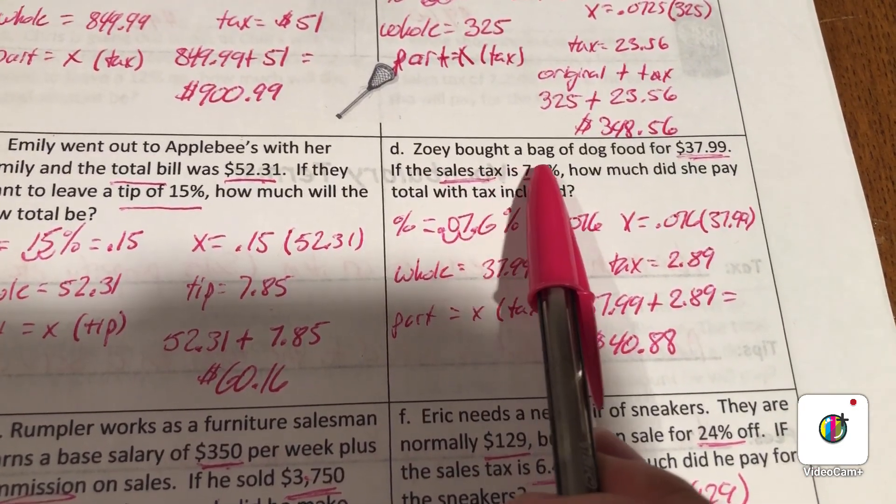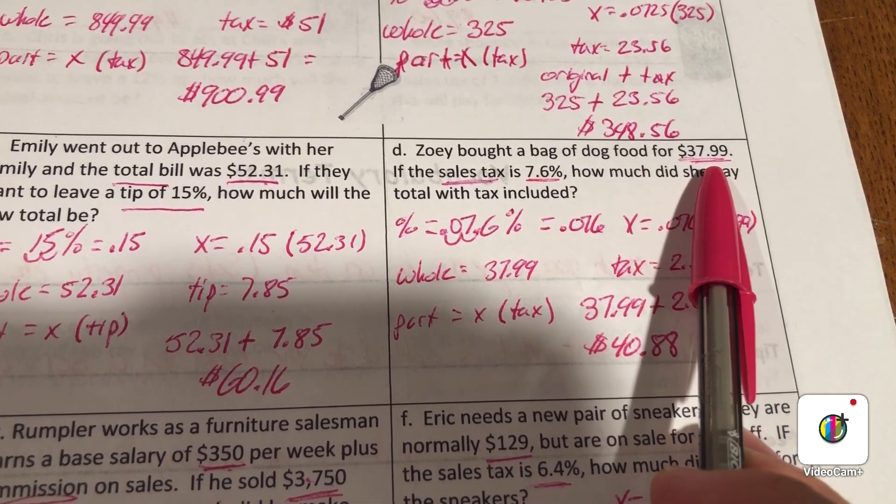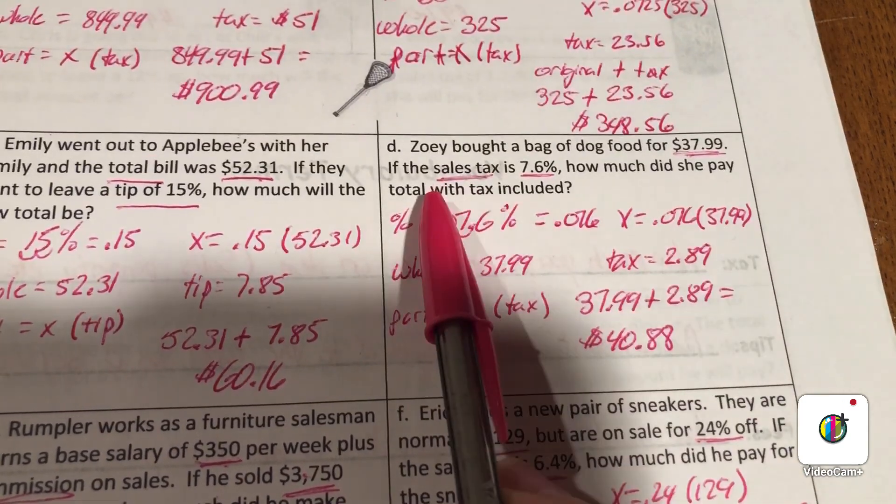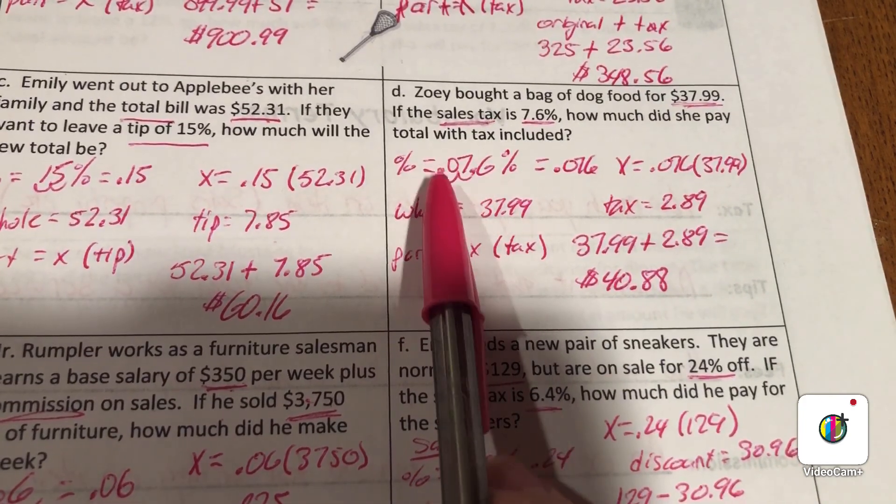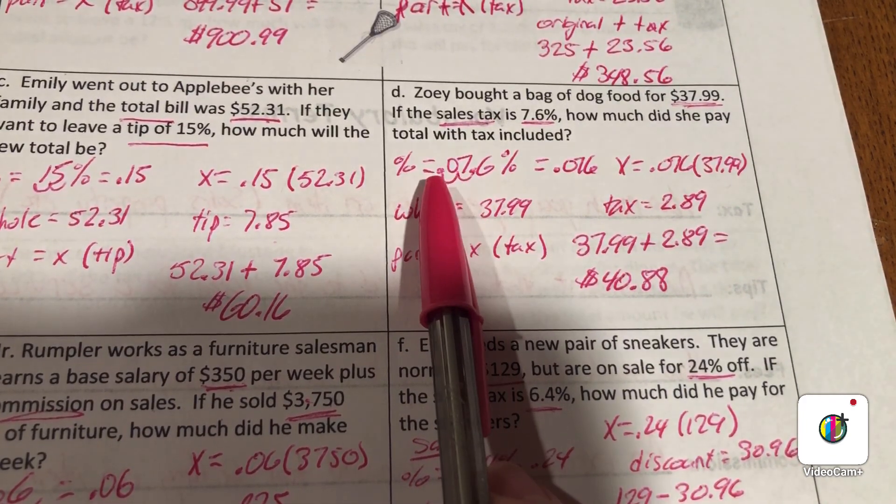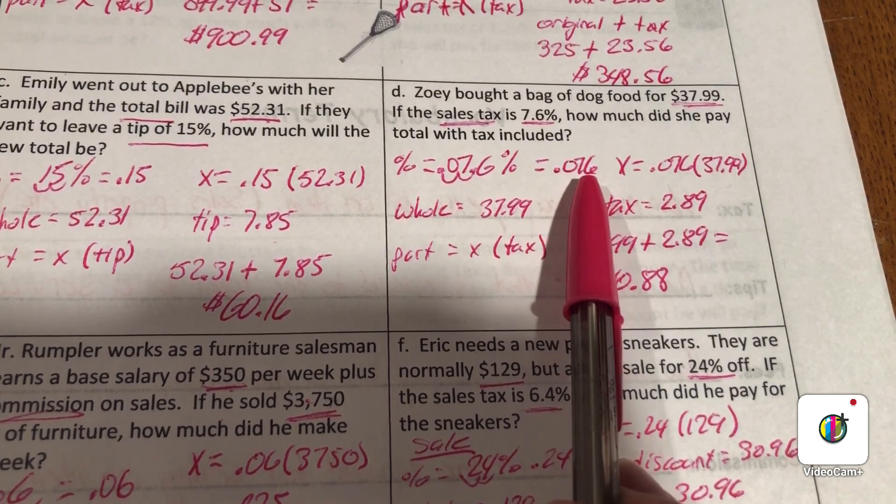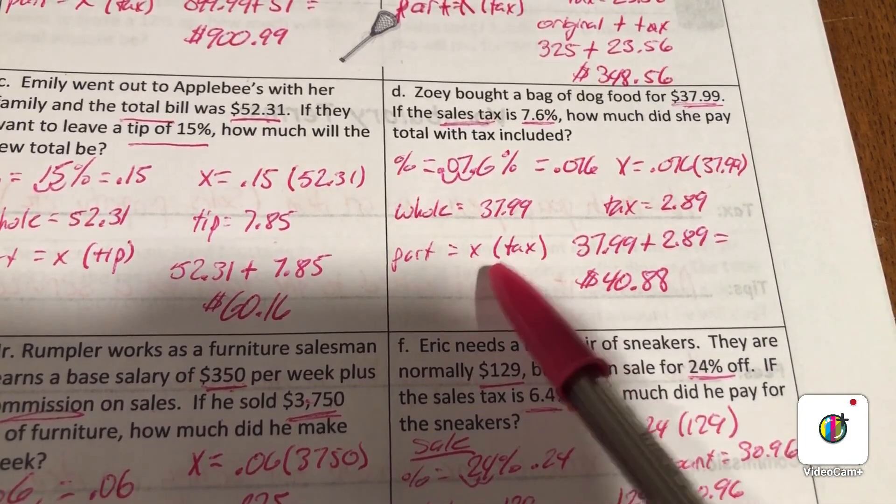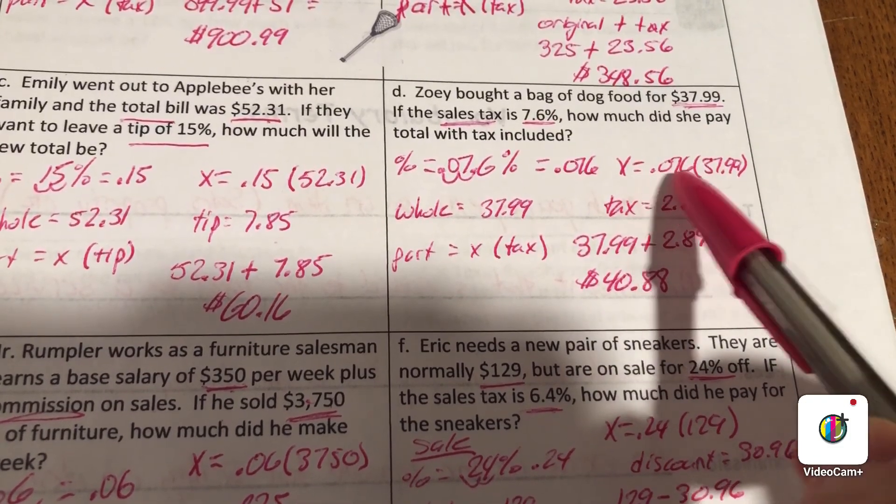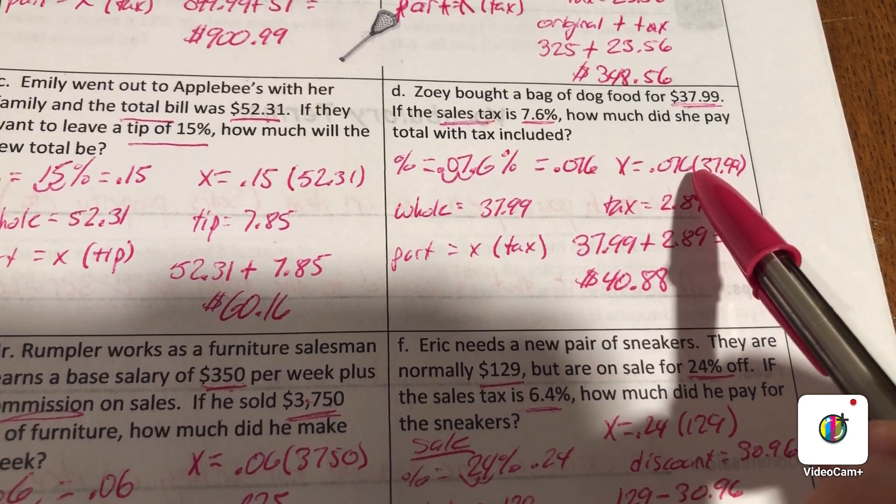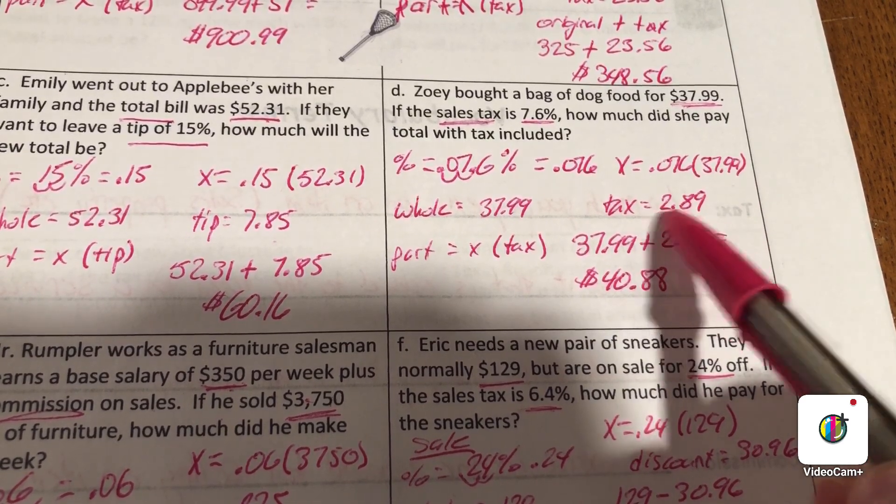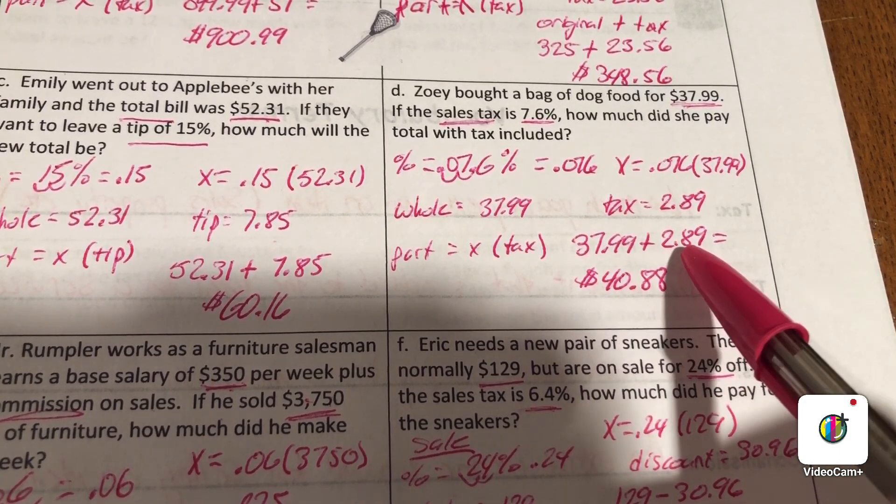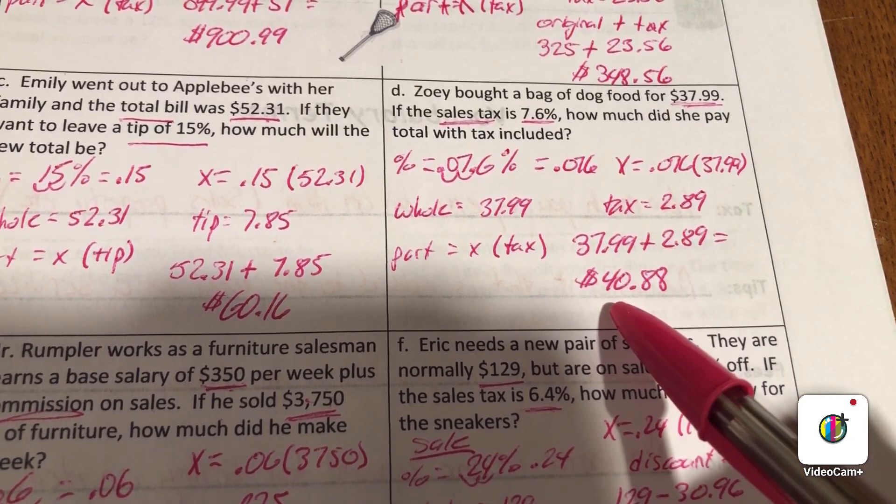Zoe bought a bag of dog food for $37.99. If the sales tax is 7.6%, how much did she pay total with tax included? The percent is 7.6, move it two times to the left to get 0.076. The whole is how much the bag costs, which is $37.99, and we're looking for the tax amount. So it's 0.076 times $37.99, so the tax is going to be $2.89. We have $37.99 plus the tax $2.89, you get $40.88.